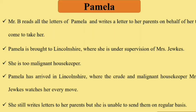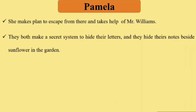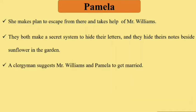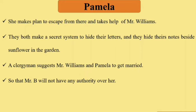Pamela makes a plan to escape from there and takes the help of Mr. Williams. They create a secret system to hide their letters, hiding notes beside a sunflower in the garden. A clergyman suggests that Mr. Williams and Pamela should get married so that Mr. B will have no authority over her.